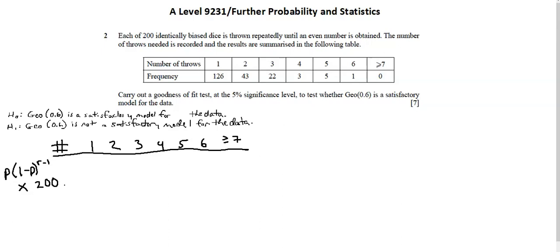I'll do this calculation for 1 through 6. In the first calculation I have p of 0.6 times 1 minus p to the power of r minus 1, which is 0.4 to the power of 1 minus 1. I multiply that by 200 and I get 120. So my expectation is 120 rolls that produce 1.